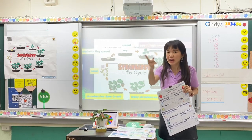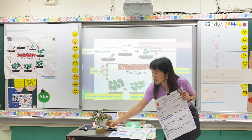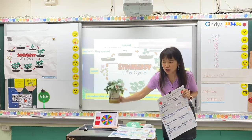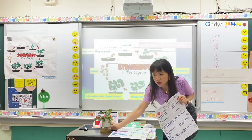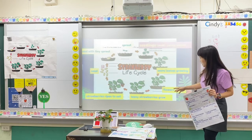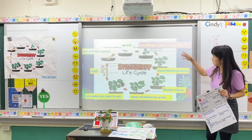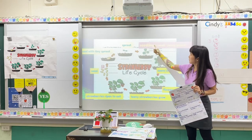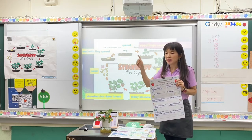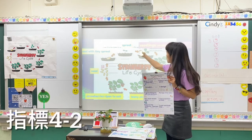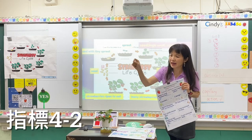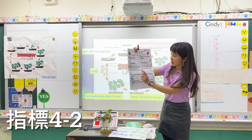Sherry, which growth stage is your strawberry right now? From your observation — 你观察到？You think it's the seedling — that is a small young plant. So please write down the word: seedling, S-E-E-D-L-I-N-G.